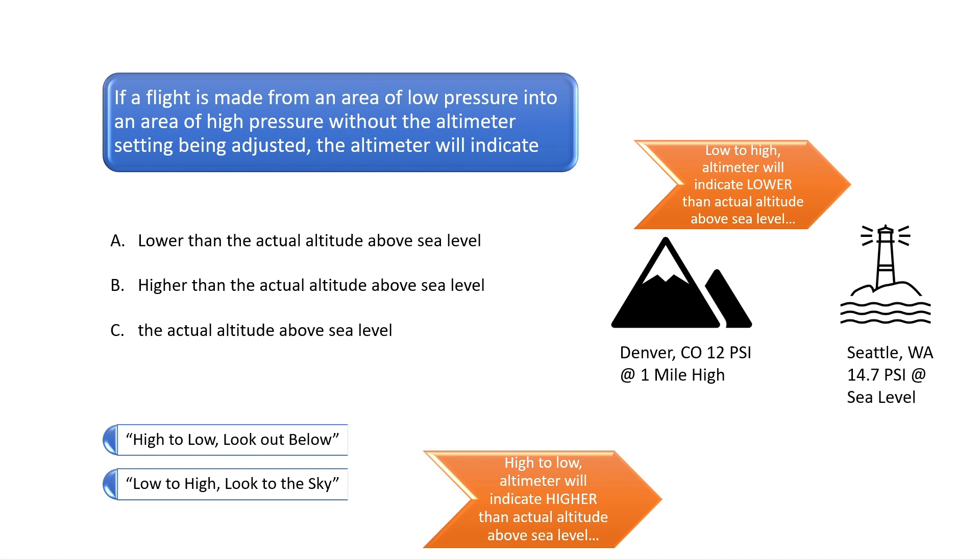Conversely, if you fly from an area of low pressure to an area of high pressure without adjusting the altimeter setting, then your aircraft would be at a higher altitude than the altimeter is reading, and thus the aircraft's altimeter would indicate an altitude lower than the actual altitude above sea level. The correct answer is A.